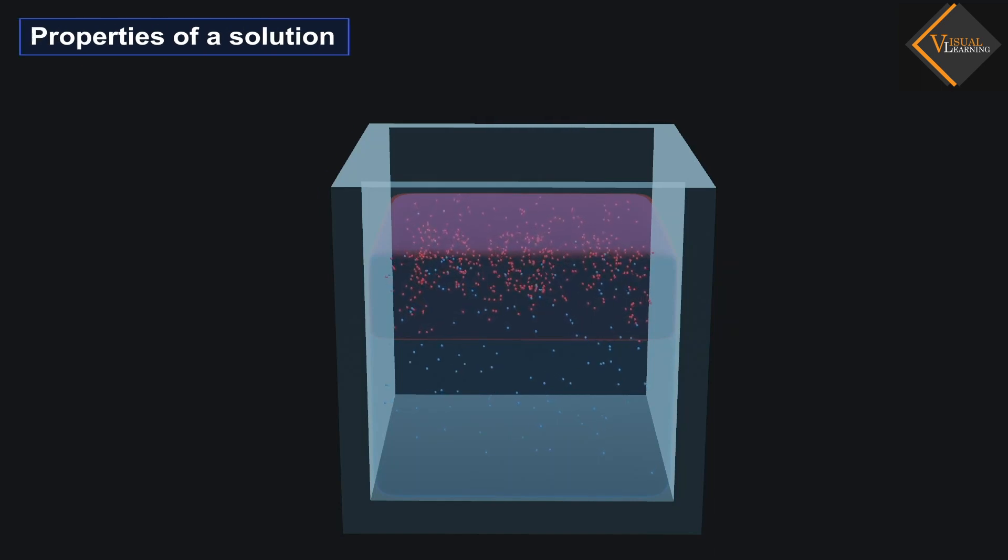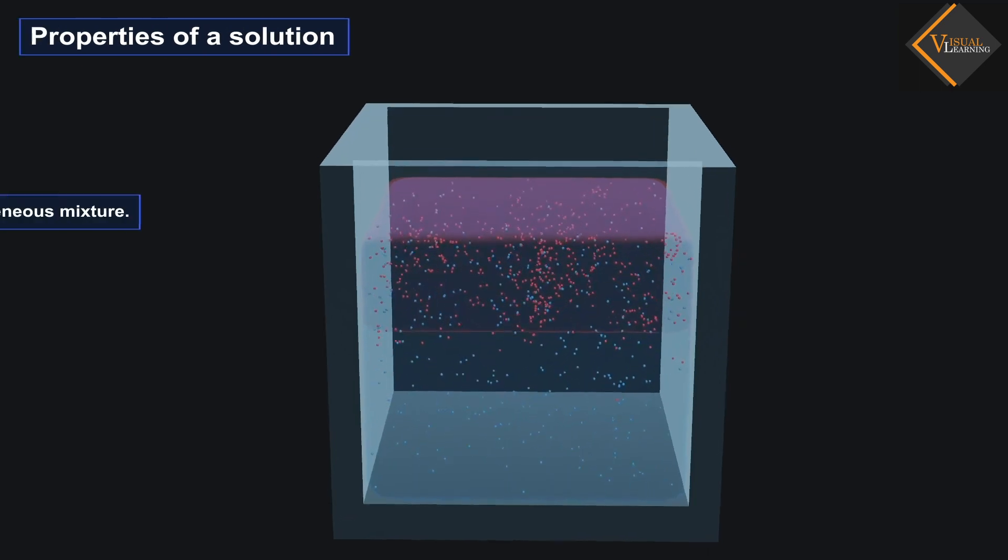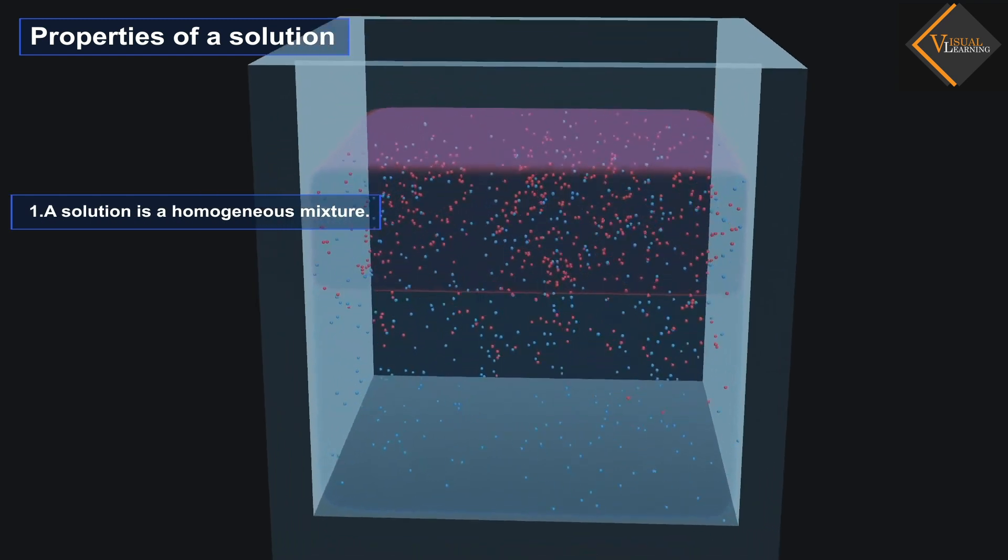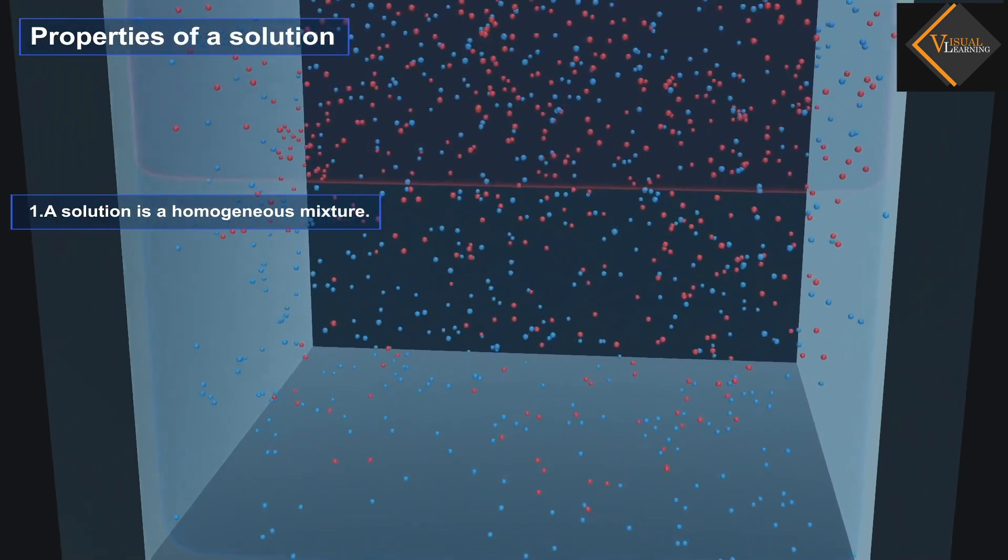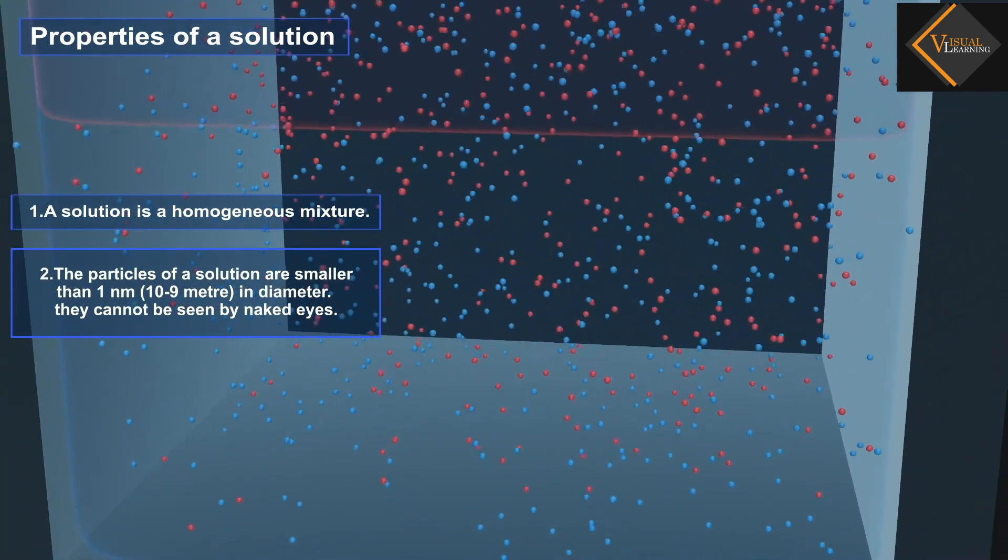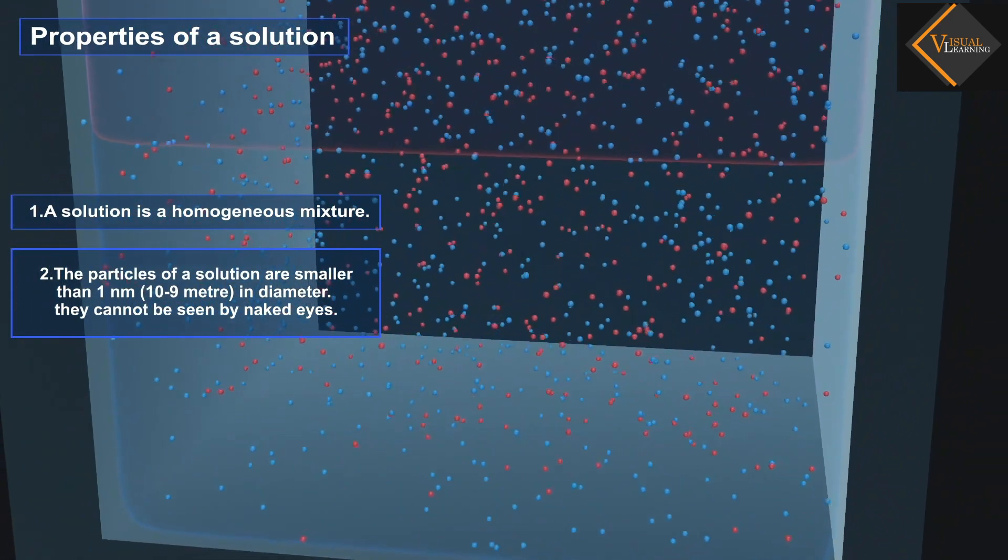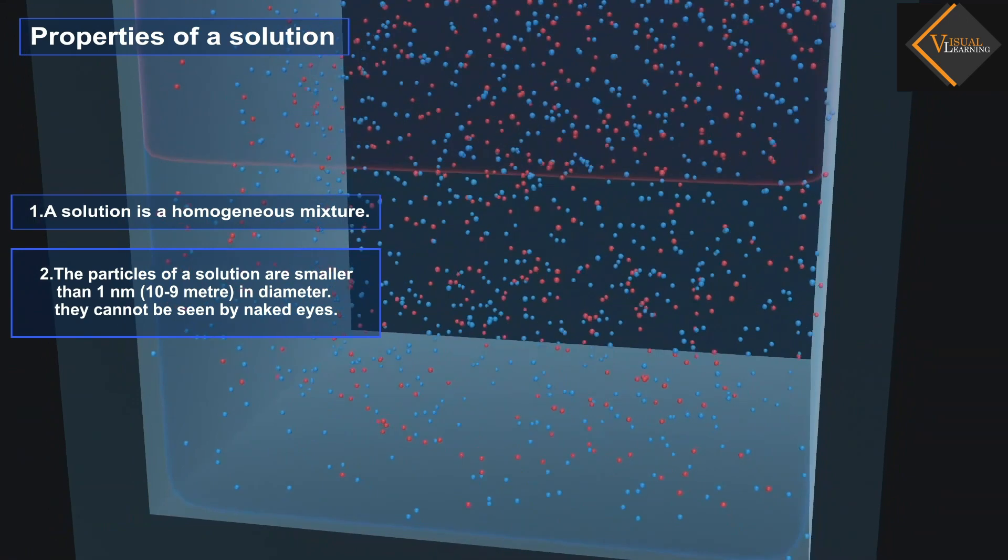A solution is a homogeneous mixture. The particles of a solution are smaller than one nanometer in diameter. They cannot be seen by the naked eye.